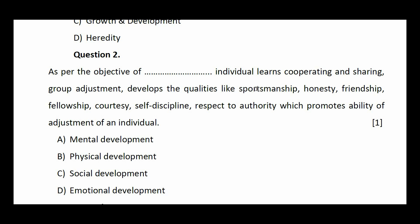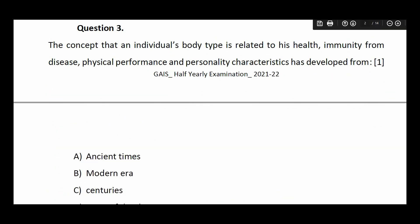Question number two: as per which objective does an individual learn cooperating and sharing, group adjustment, develop qualities like sportsmanship, honesty, friendship, fellowship, courtesy, self-discipline, and respect to authority, which promotes ability of adjustment? Options: mental development, physical development, social development, emotional development. The answer is social development.